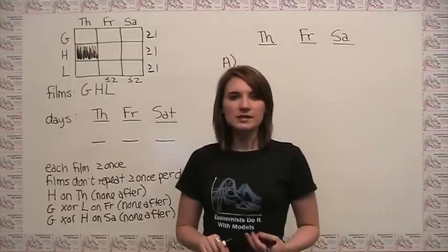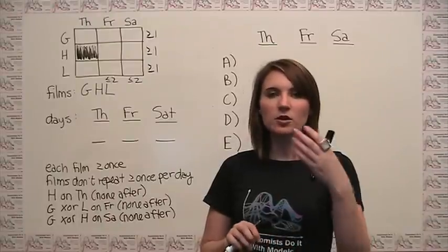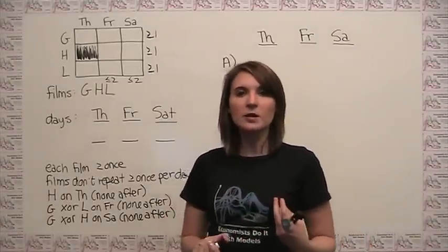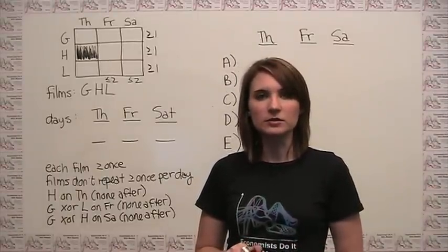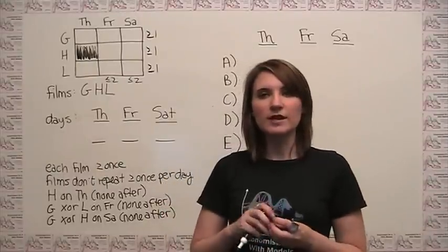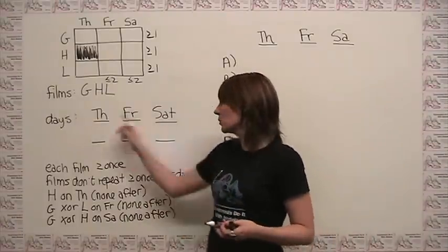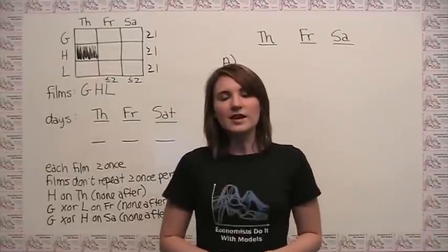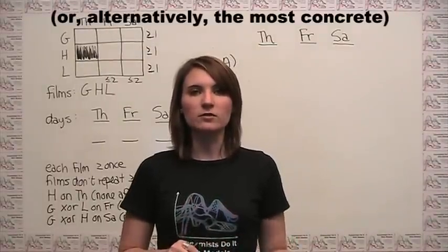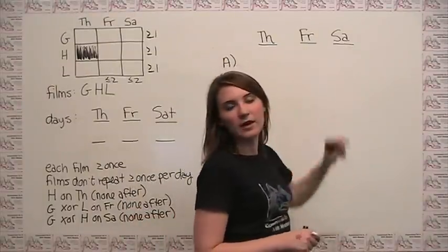Each of the answer choices has a slightly different structure, and we need to think about where we really want to start. Do we go in order from A to E, or think about what's easiest to approach? Because the question asks which one cannot be true, four of these are going to be fine — we'll try to place them and won't reach a contradiction. The correct answer, when we try to place it, will in fact reach a contradiction and break one of the rules. So the most appealing answer choices to try are the most limiting ones, because to break a rule you have to be able to trigger it — meaning you have to actually place things under our Thursday, Friday, and Saturday headings.